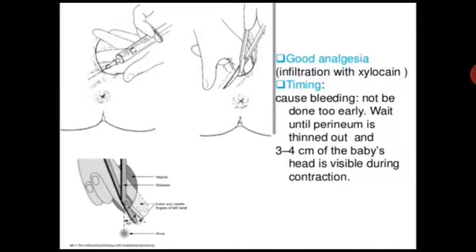Good analgesia with infiltration: xylocaine is injected locally before episiotomy is performed. Timing is important — do not perform it too early; wait until the perineum is thinned out and 3 to 4 cm of the baby's head is visible during a contraction.